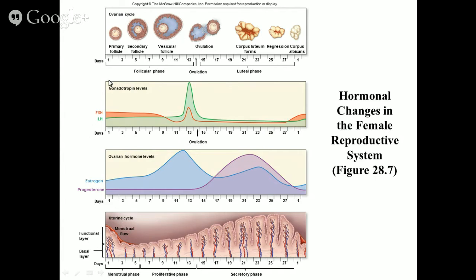The bar at the top is the ovarian cycle, while the bar at the bottom is the uterine cycle. The top bar tells you what happens every 28 days at an ovary; the bottom bar tells you what happens every 28 days in the uterus — and they're the same 28 days. Meanwhile, there are two hormones we have to keep an eye on: the gonadotropins FSH and LH — follicle stimulating hormone and luteinizing hormone — both coming from the anterior pituitary gland. Two other hormones, estrogen and progesterone, are produced by the ovary.